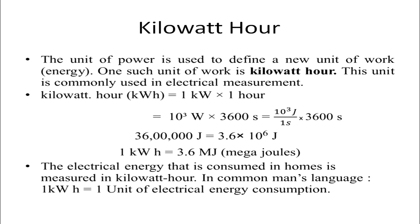The unit of power is used to define a new unit of work, that is energy. One such unit is kilowatt hour, commonly used in electrical measurement. 1 kilowatt hour = 1 kilowatt × 1 hour = 10³ watts × 3600 seconds = 3.6 × 10⁶ joules, which equals 3.6 megajoules. The electrical energy consumed in homes is measured in kilowatt hours — in common usage, 1 kilowatt hour equals 1 unit of electrical energy consumption.